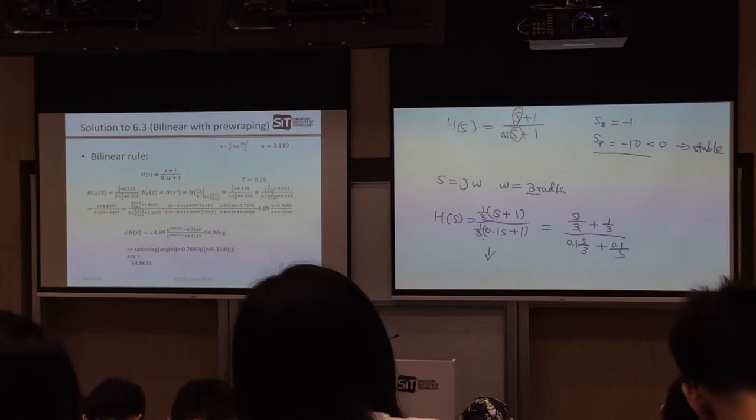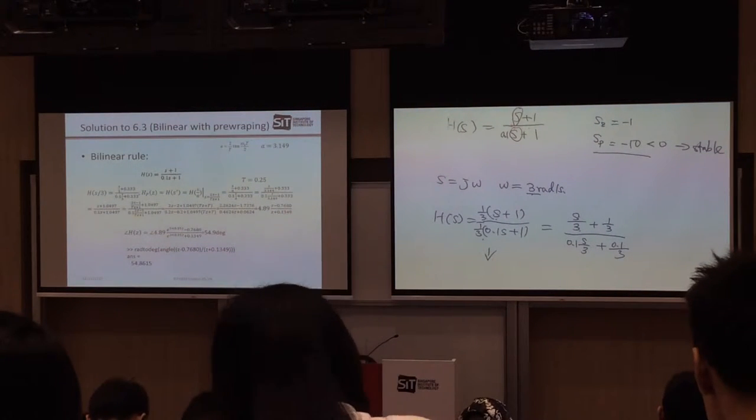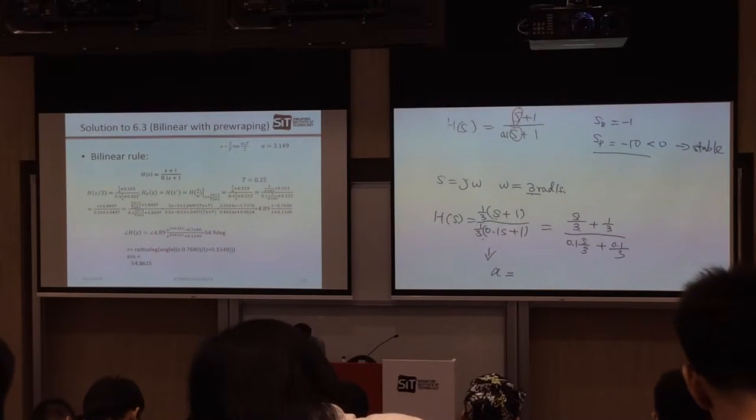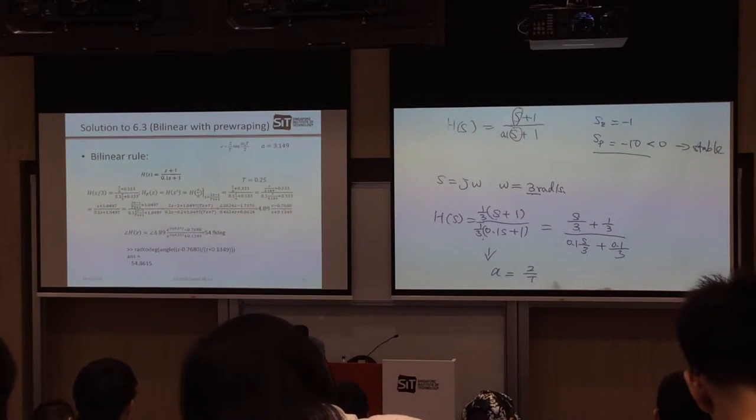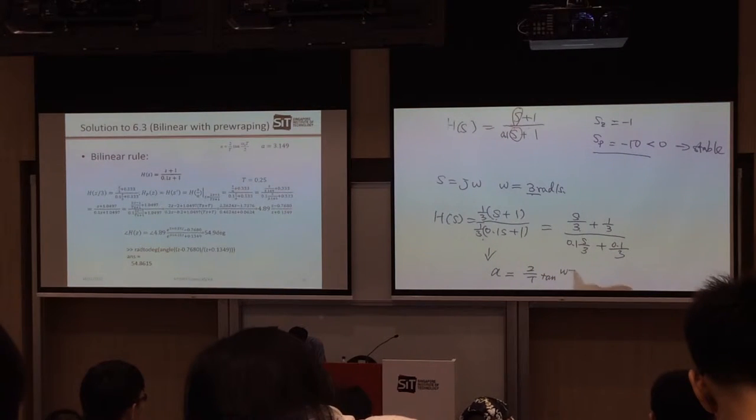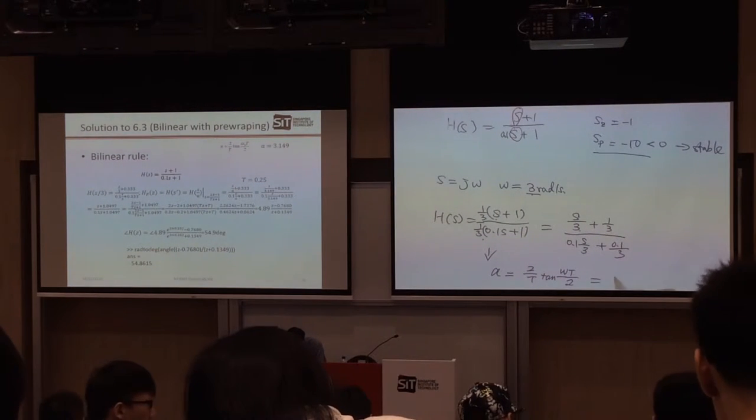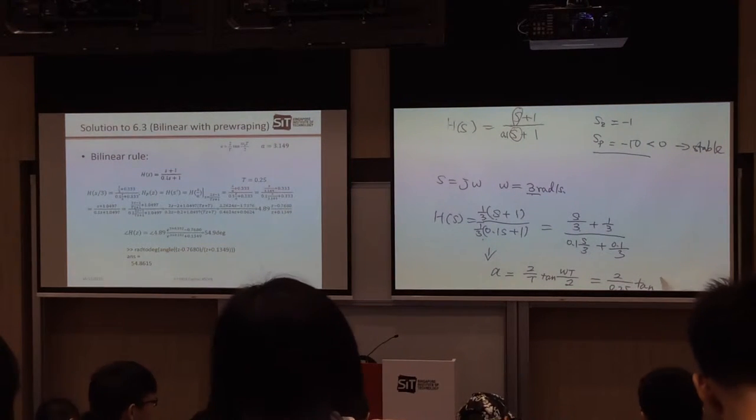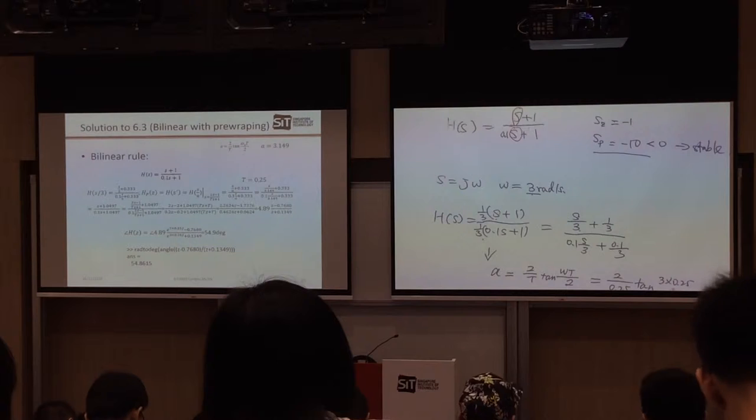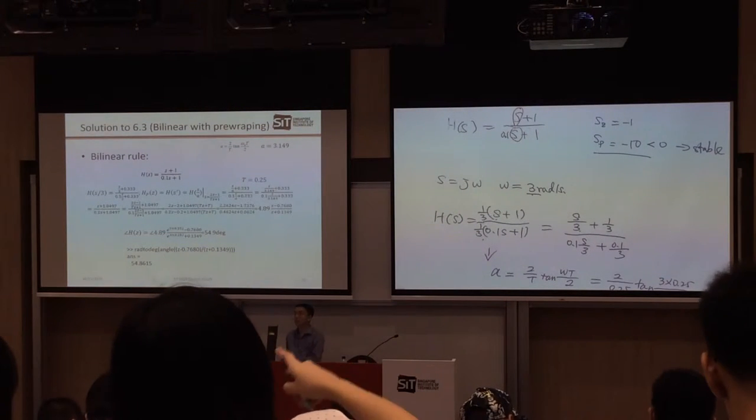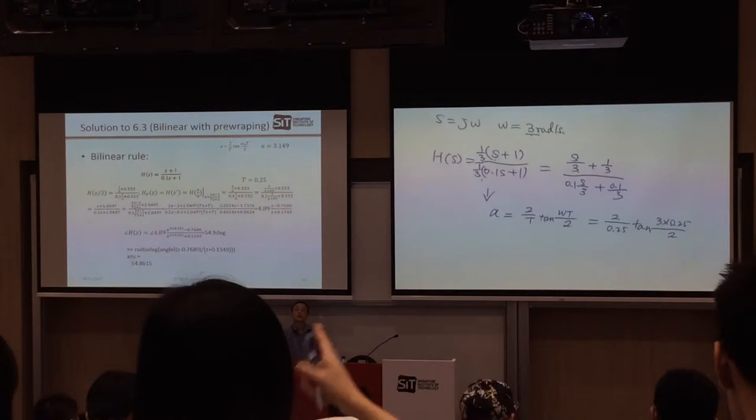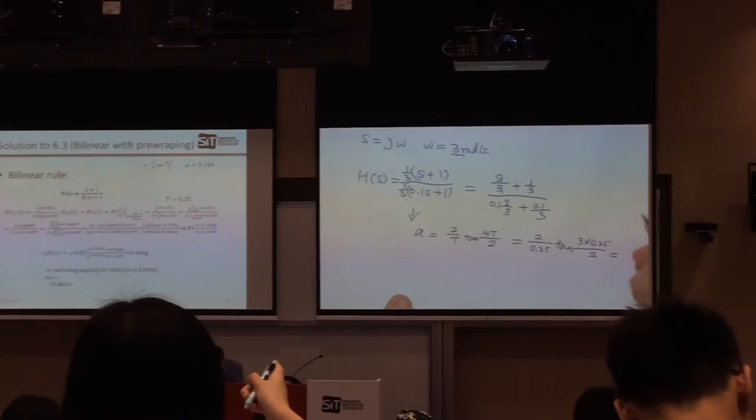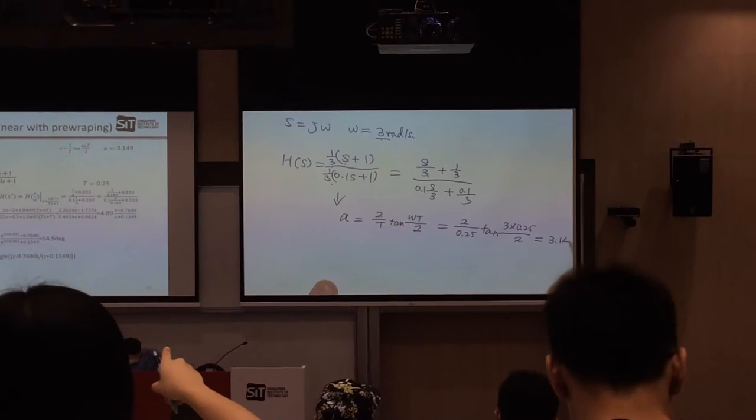And the next step, I need to do the pre-warping. So the pre-warping I need to prepare how much is A. A is 2 divided by 3, tangent, omega, 3 divided by 2. So basically, 2 divided by 0.25, your engine, 3 and 0.25 divided by 2. So, for this one, I will get my A is 3.149.